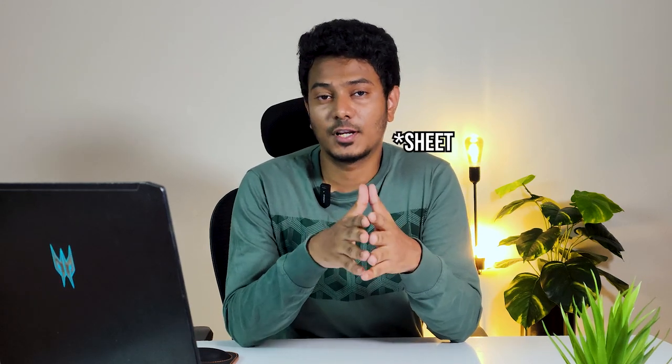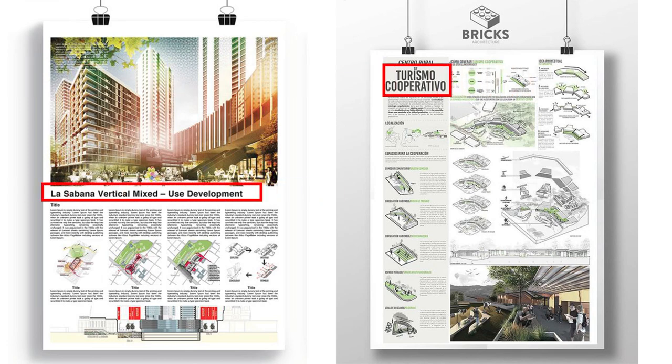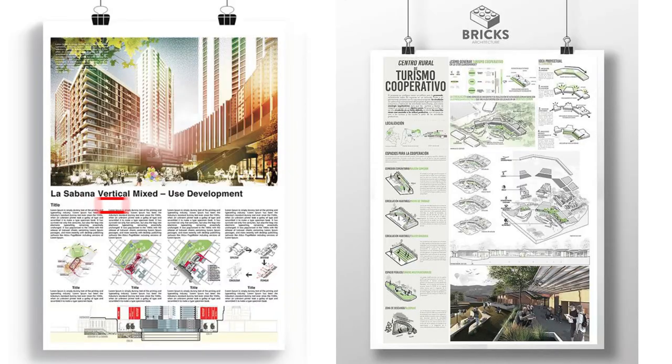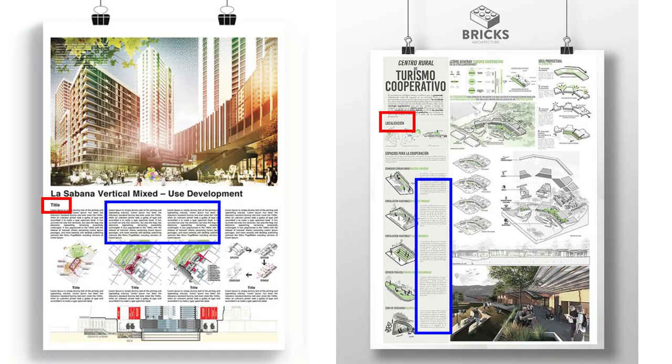Most presentation sheets have three different sizes of fonts. The first is the title, which uses the maximum font size to draw attention when someone looks at the sheet for the first time. A slightly smaller size can be used for subheadings, and your paragraph text can have the smallest font size.